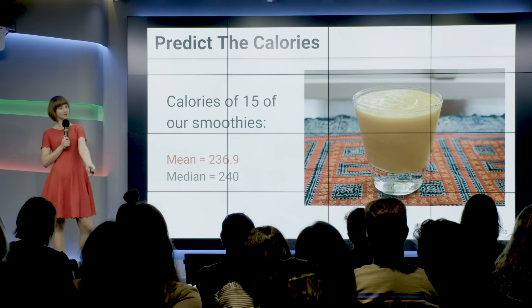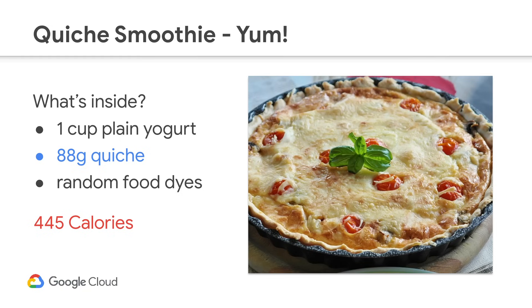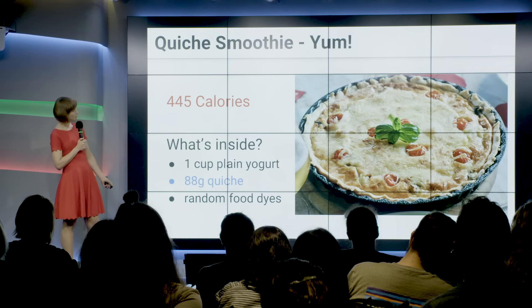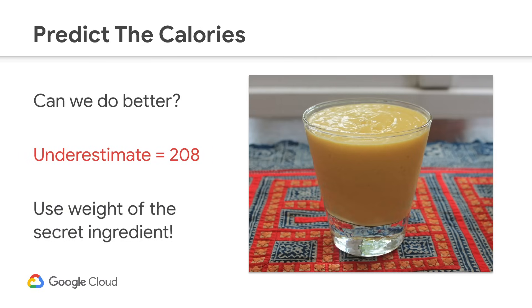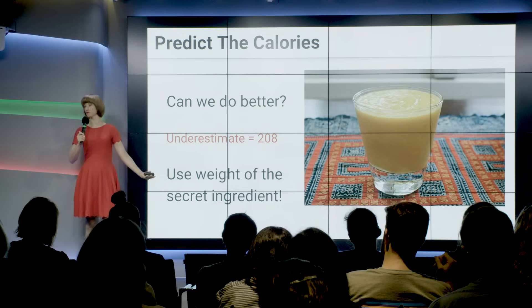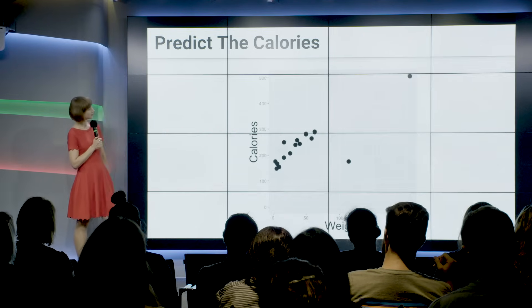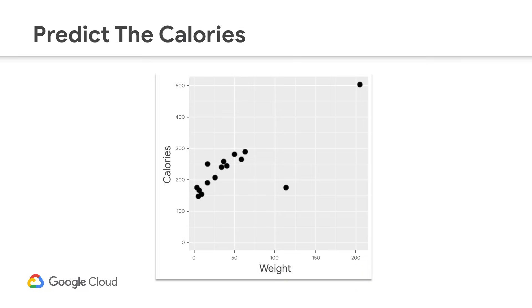I'll go for 237. It turns out to be 88 grams of quiche Lorraine, clocking in at a whopping 445 calories — proving to us that any liquid diet is beatable. We had an underestimate of 208 calories with that strategy. Can we do better? Maybe it would help to have the weight of the secret ingredient. So what we'll do as analysts is make a little plot — weight from 0 to 200 grams on the x-axis and calories from 0 to 500 on the y-axis.